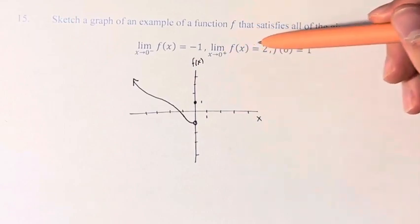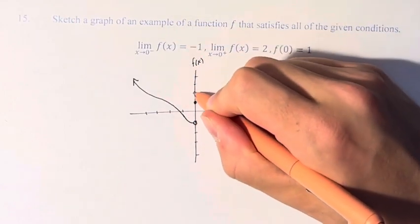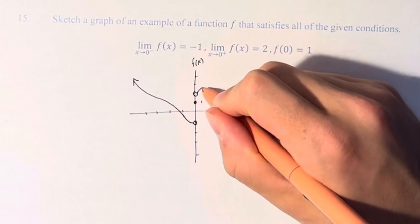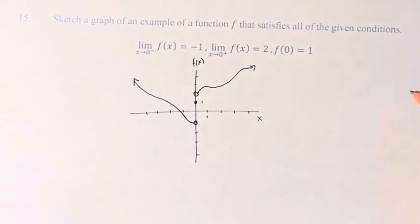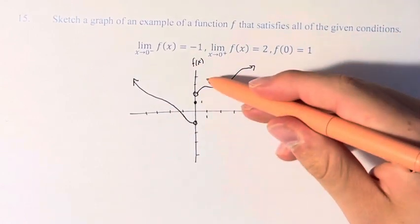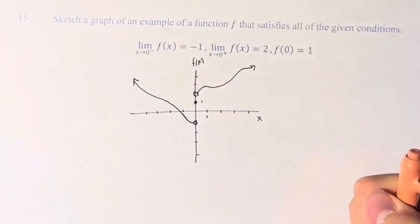And as it approaches 0 from the right, it equals 2. So again, open circle at 2, and the function can do whatever we want after that. And this is just an example of the function f that satisfies these conditions.